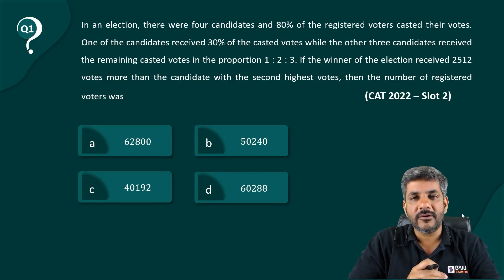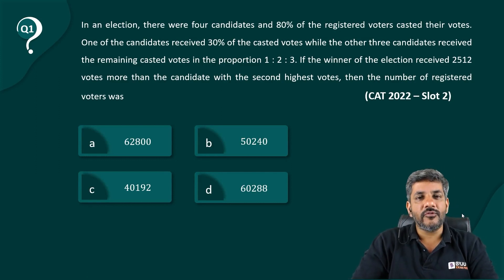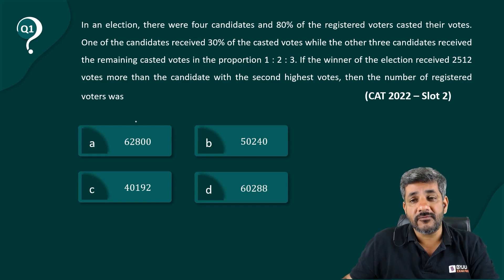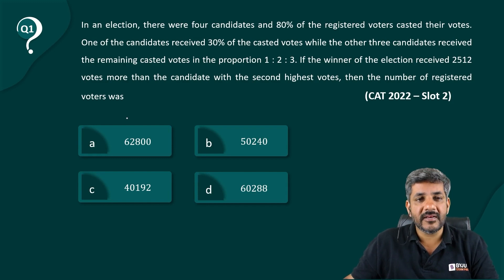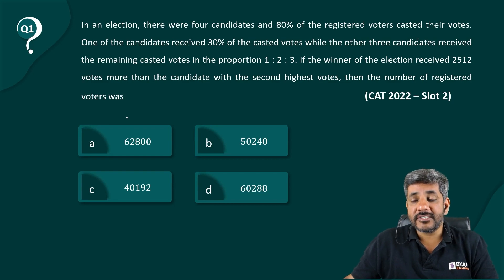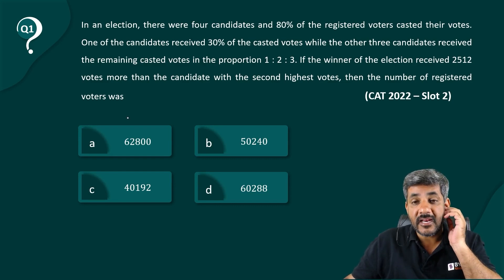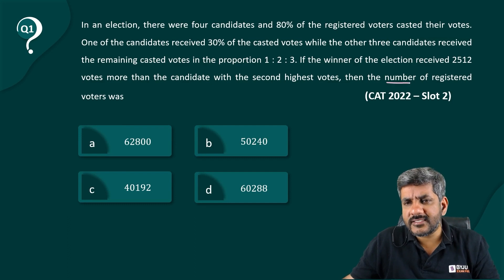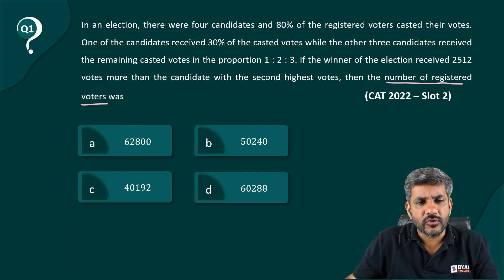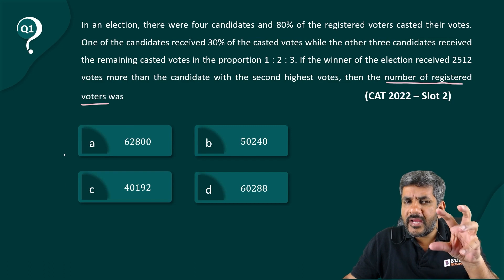Here is a question from CAT 2022 Slot 2. In an election there are four candidates. 80% of the registered voters cast their votes. One of the candidates received 30% of the casted votes, while the other three candidates received the remaining votes in a ratio of 1:2:3. The winner received 2512 votes more than the candidate with the second highest votes. The question asks: what is the number of registered voters?